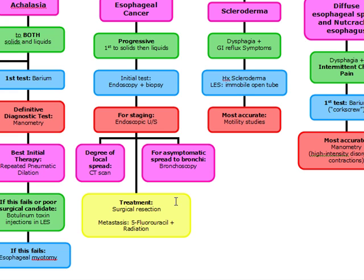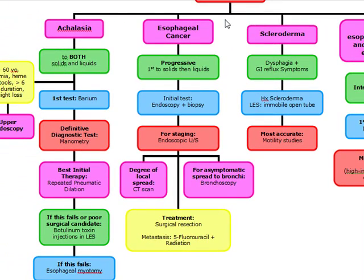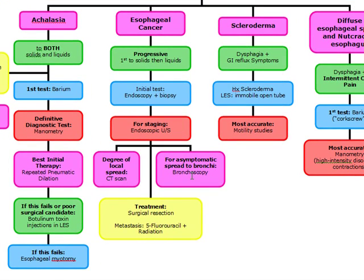The chemotherapy we're going to use is 5-fluorouracil, and we're going to add radiation to that. To summarize esophageal cancer: first a dysphagia to solids that progresses to liquids. Initially we do endoscopy plus biopsy. To stage, we do endoscopic ultrasound — very high yield. To see degree of local spread, CT scan. For asymptomatic spread to the bronchi, bronchoscopy. Treat with surgical resection for localized disease, and chemotherapy plus radiation with 5-fluorouracil for metastasis.